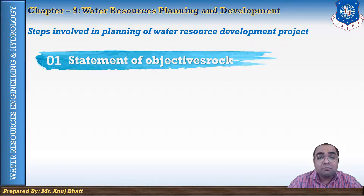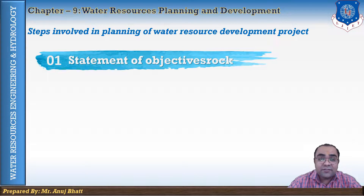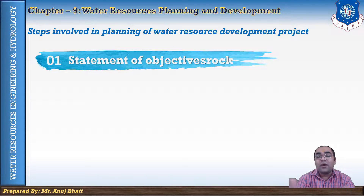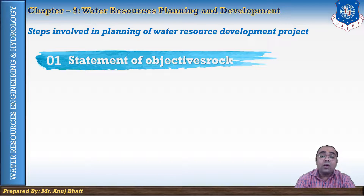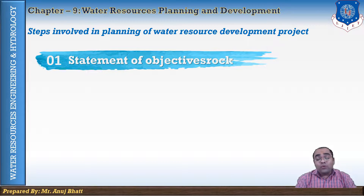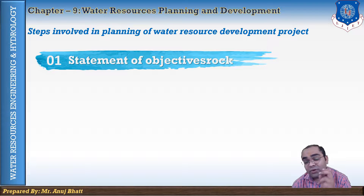For example, a national government may have the broad goal of achieving the maximum economic and social benefits from the development of water resources. While the government of the state or district which is prone to flood may have a single objective of reducing the flood damage within its boundaries. Similarly, corporations, metropolitan councils, or village panchayats needing water supply or irrigation facilities may have objectives justified in terms of benefits to their own residents. So the statement of objectives for the particular project is mandatory.